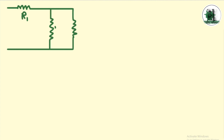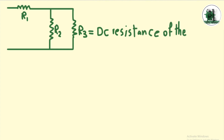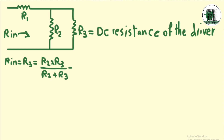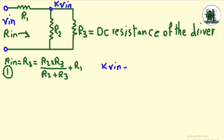First, we model the speaker with a resistor called R3, which is equal to the DC resistance of the driver. As you know, this formula gives the resulting resistance of parallel resistors. Pay attention that the value of the input impedance must be equal to the previous impedance of the speaker, or R3. We also need another relationship.